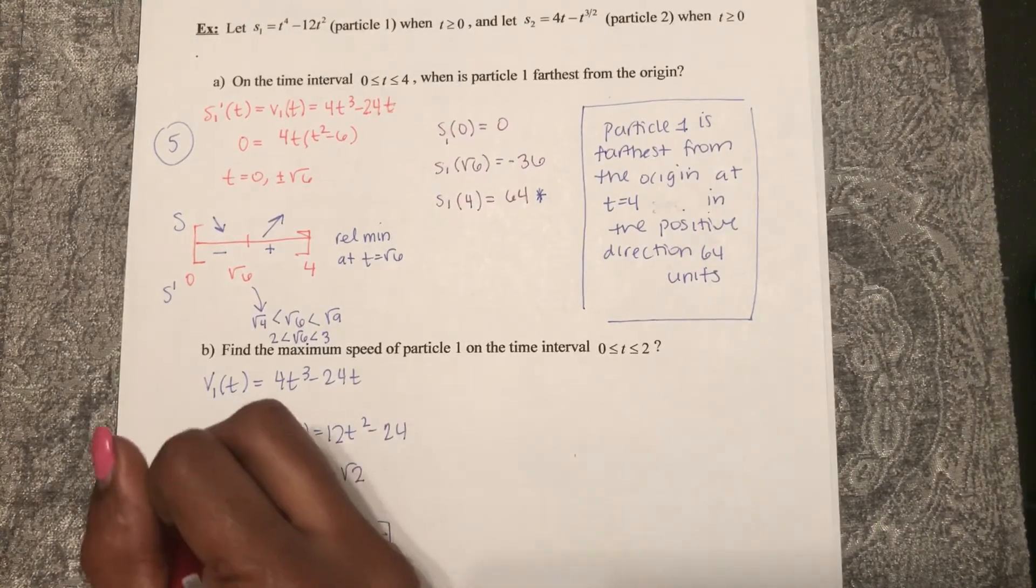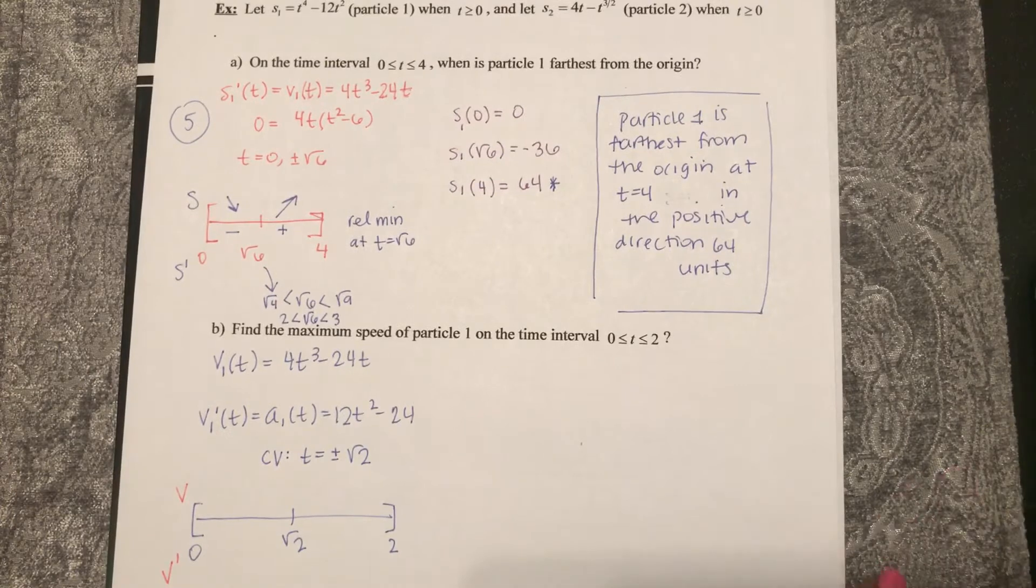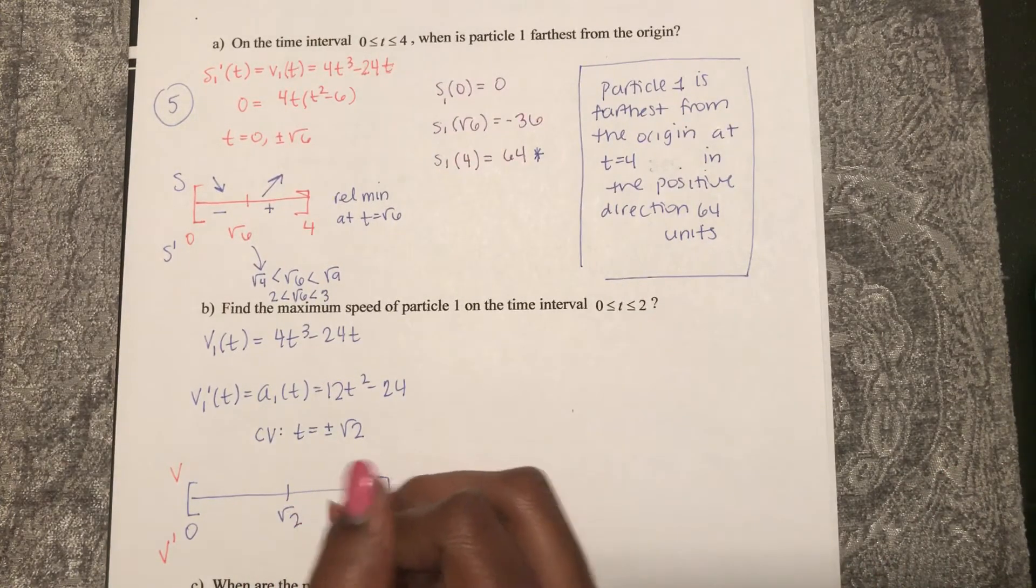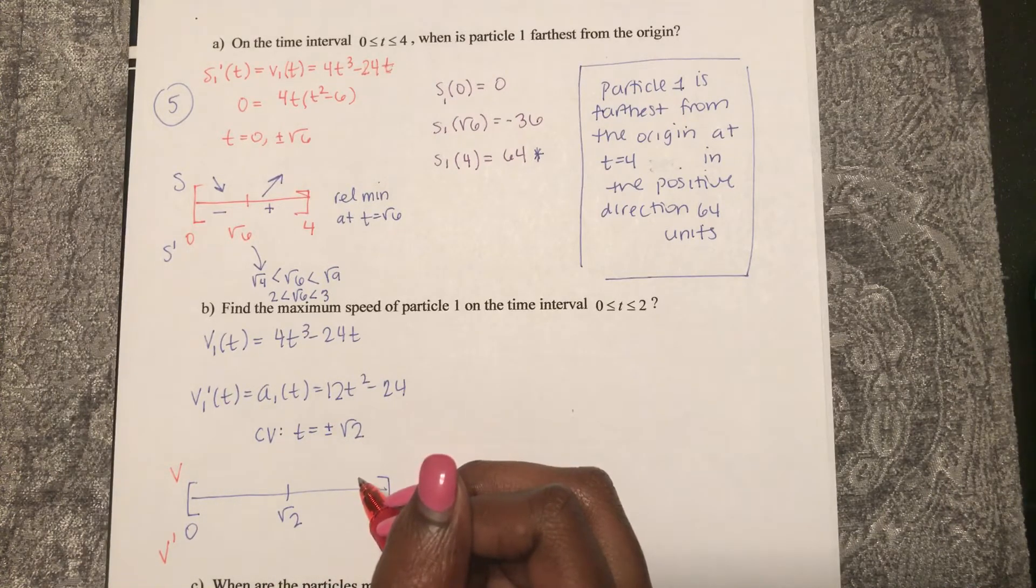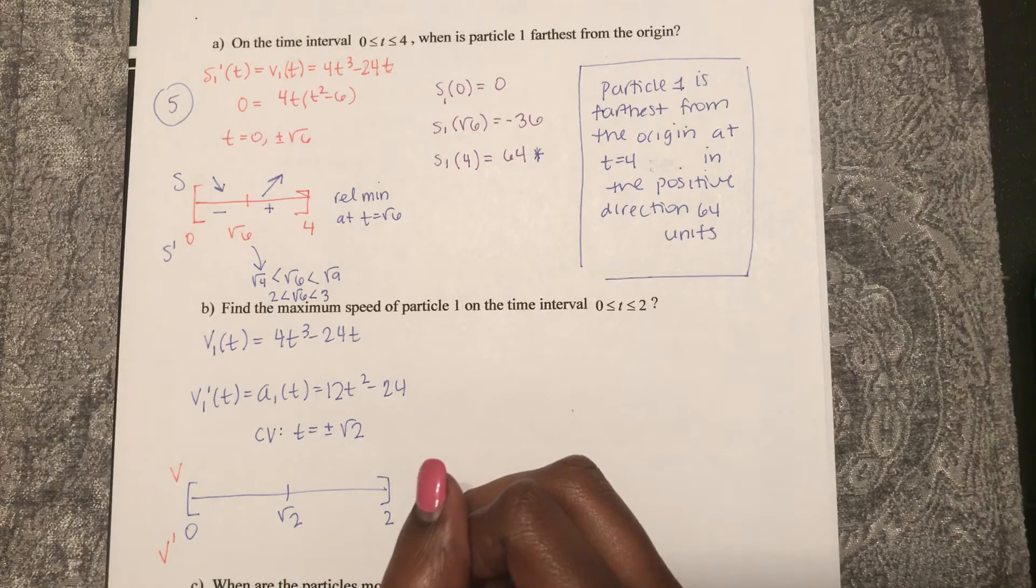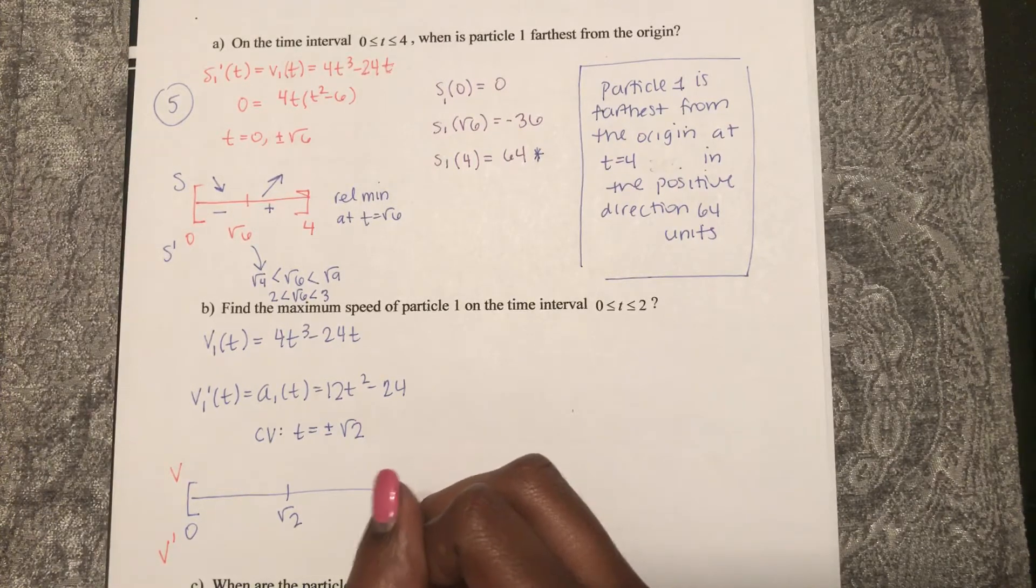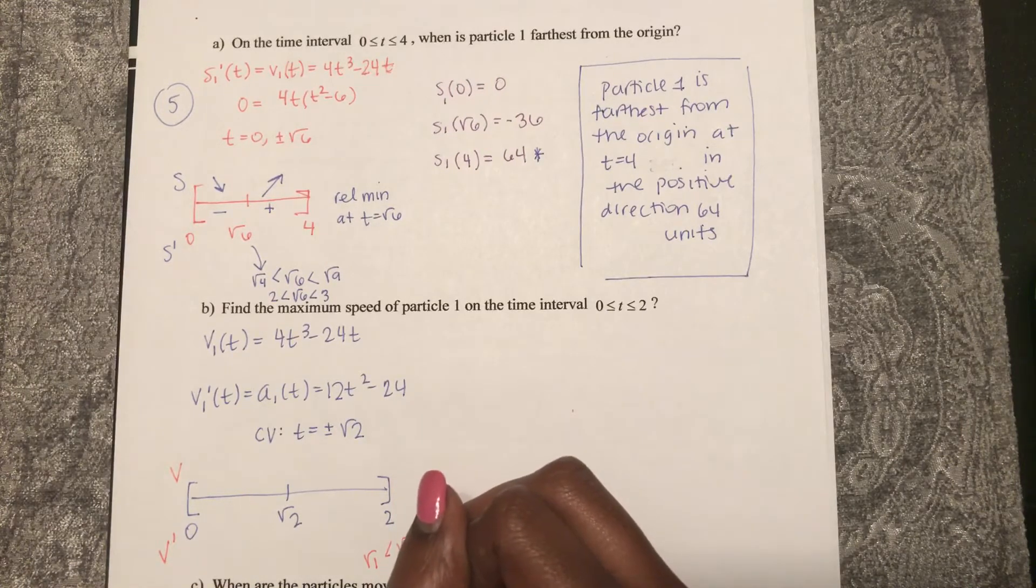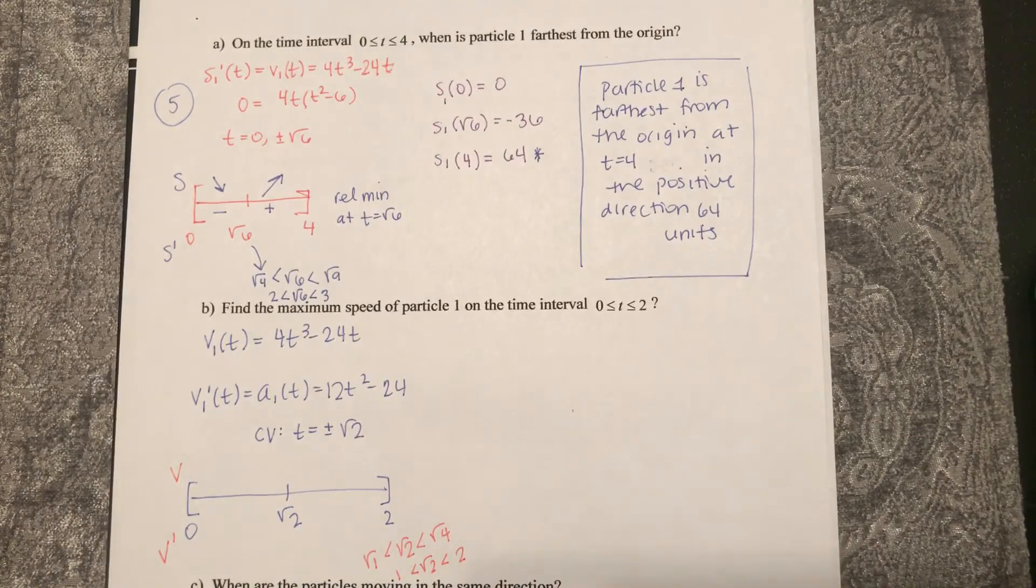We're comparing our velocity to its derivative. So if I plug in a number greater than square root two, let's see, remember square root of two is between square root of one and square root of four. So square root of two is between one and two.